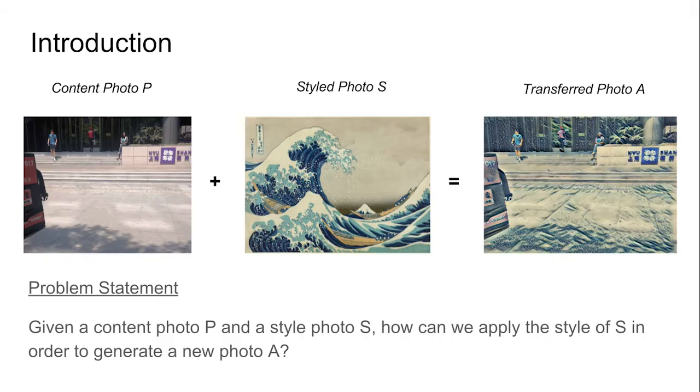The image above is an example of style transfer. It can also help us formulate our problem statement. How can we selectively apply the style from styled photo S over the content photo P to generate a new photo A? This brings about a variety of questions. How do we retain the essential aspects of the content photo structure? How can we cleanly remove the style of the content photo? How can we train our computers to perceive these differences on a semantic level?